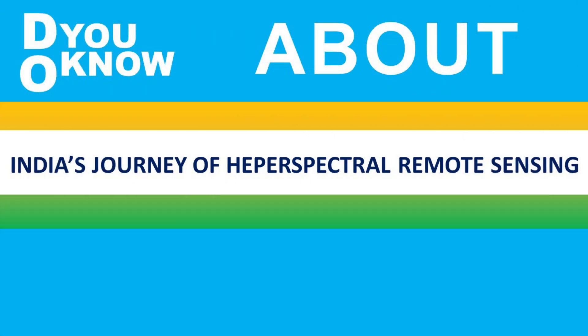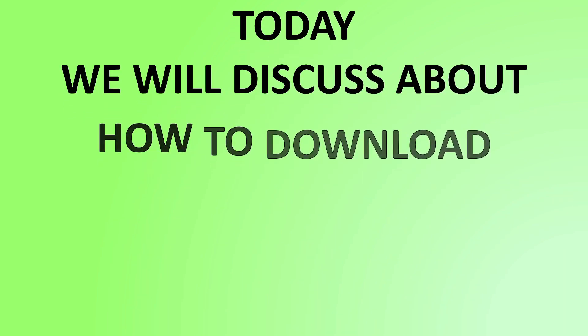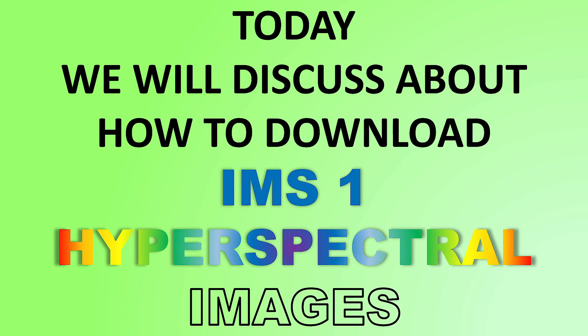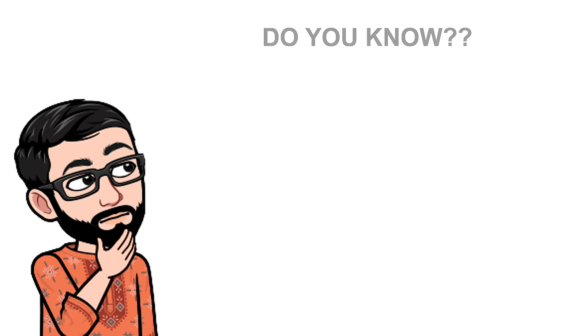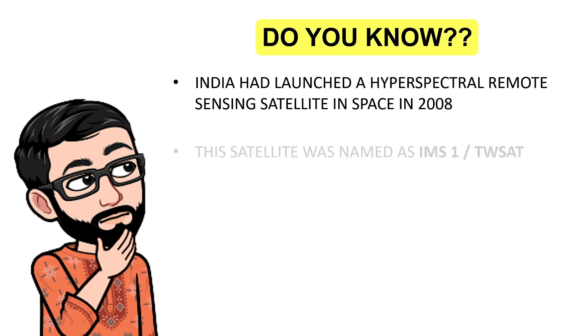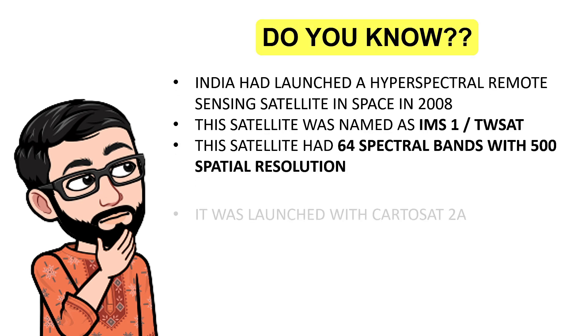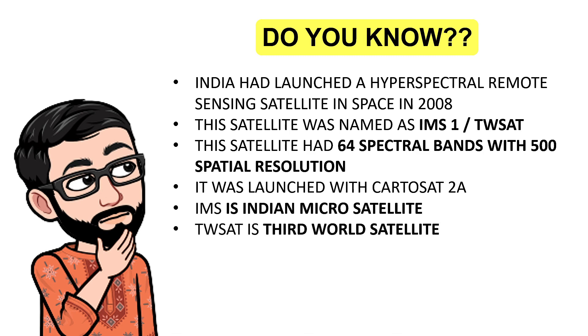Do you know about India's journey of hyperspectral remote sensing? Today we will discuss how to download IMS-1 hyperspectral data. India launched a hyperspectral remote sensing satellite named IMS-1, also known as TWSAT, in 2008 along with CartoSat-2A. This satellite had 64 spectral bands and 500 meter spatial resolution.